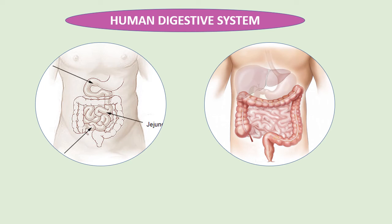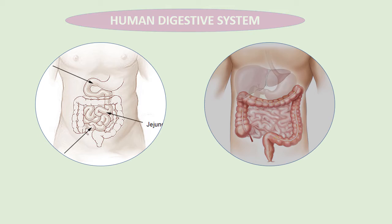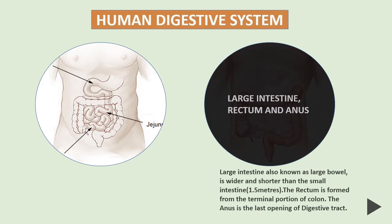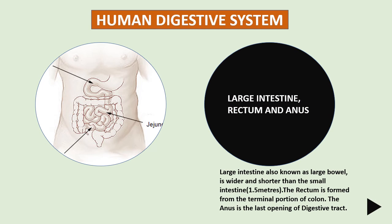The large intestine, or colon, is responsible for processing waste so that emptying the bowels is easy and convenient. It connects the small intestine to the rectum.